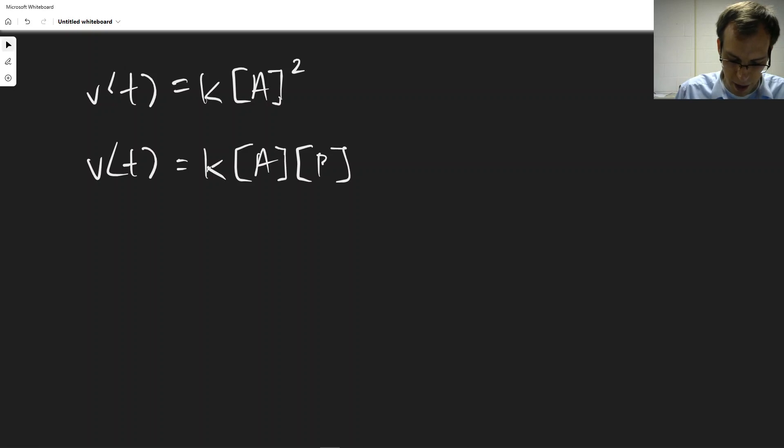So this is pretty common, is to have multiple things that your rate law depends on. And so the total order is 2, but each reactant is only first order.